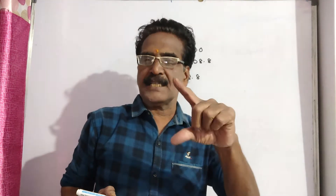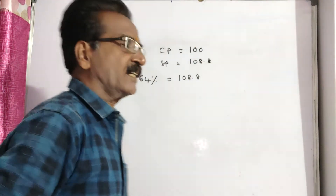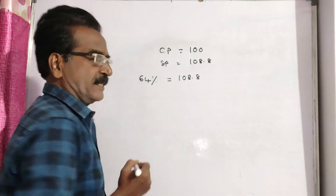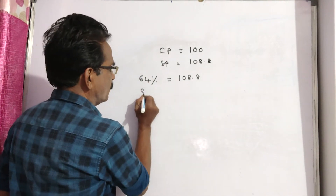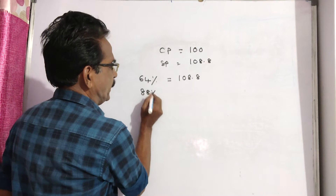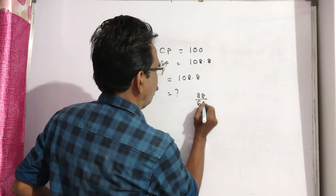Now the commission is reduced by 24 percent, so the present commission is only 12 percent. If commission is 12 percent, then the sold price will be 100 minus 12, which is 88 percent of the market price. We have to find 88 percent of the market price. Since 64 percent equals 108.8, we compute 88 divided by 64 into 108.8.